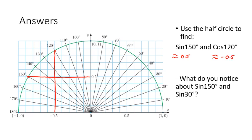Cosine of 120, we find 120, we go down, that's going to be approximately negative 0.5. And if we're going to find out what we notice about sine 150, which we know is approximately 0.5, and sine 30, which is on the other side, that's also going to be 0.5.